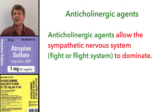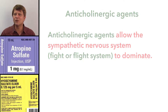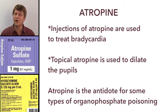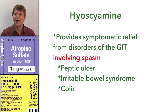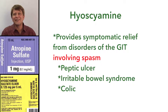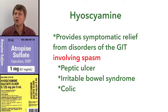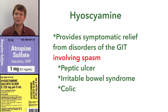Atropine is mostly used to inhibit the vagal response in the heart, meaning that it treats bradycardia. Hyoscyamine is more specifically acting in the GI tract, and it's going to treat things like peptic ulcer, irritable bowel syndrome, and other gastrointestinal tract disorders.